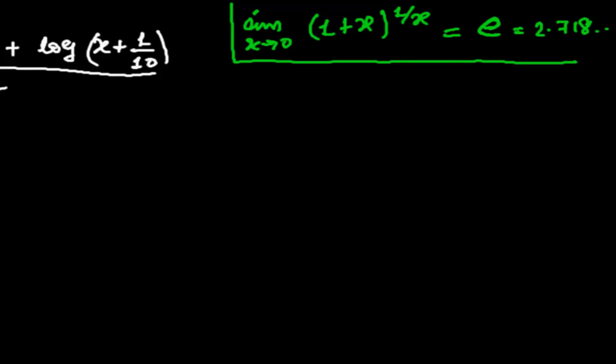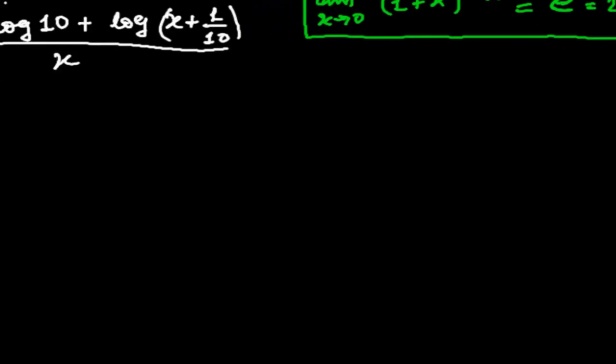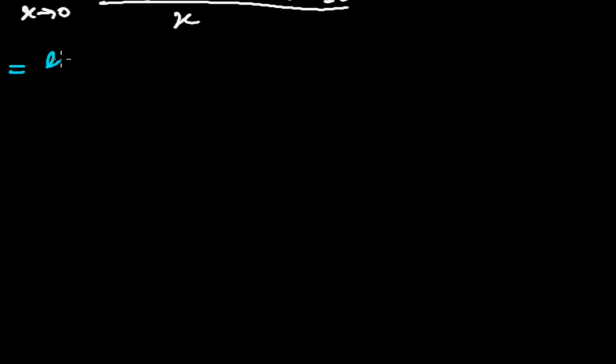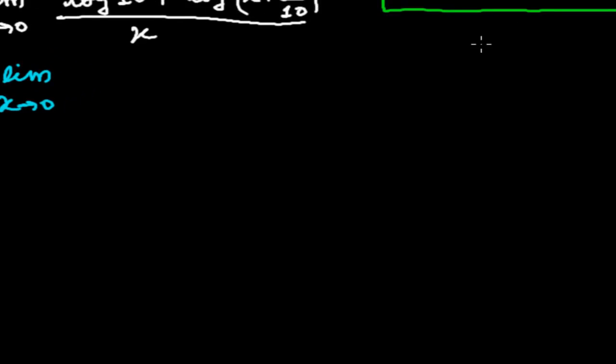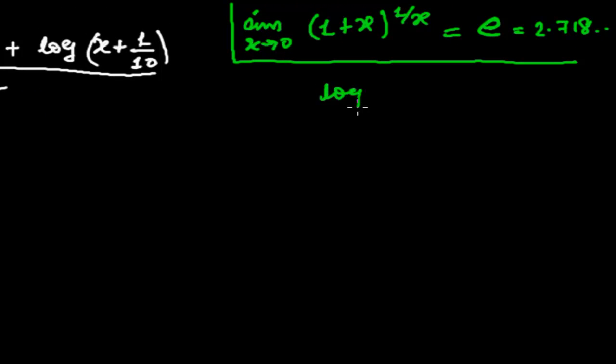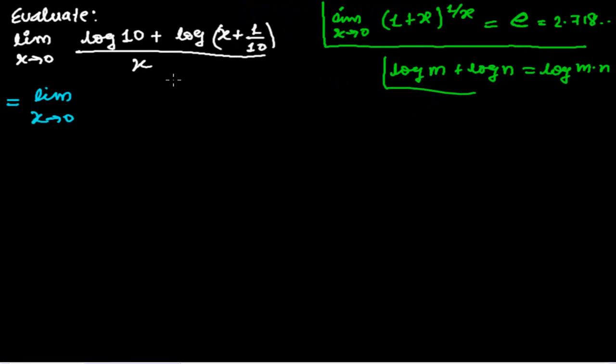Now, limit when x tends to 0, and another formula I want to write here: in the logarithm chapter we have learned that log m plus log n equals log m times n. This is the formula in logarithm. So again, we have to use this formula here, another formula.